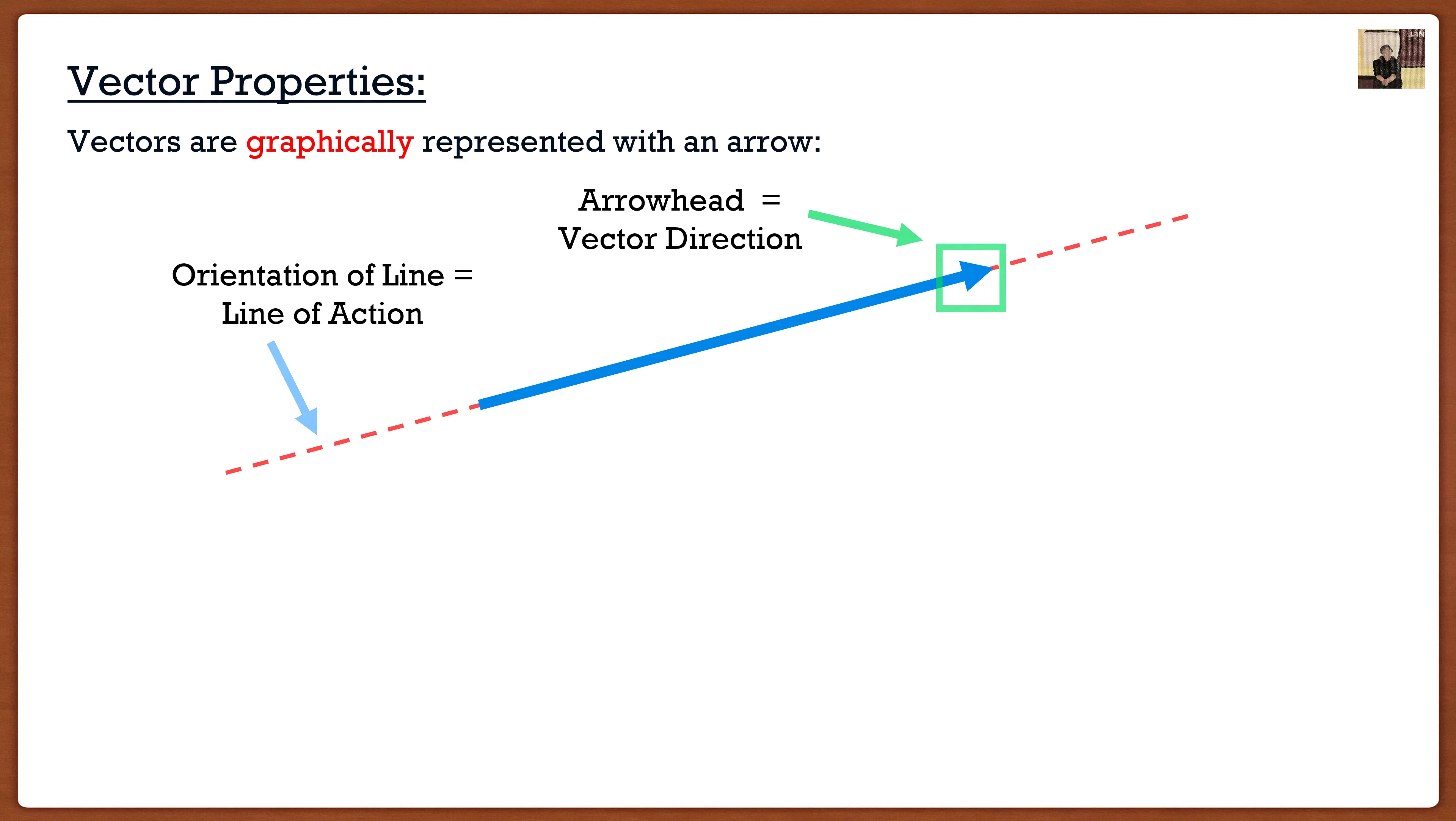The second one is the arrowhead, or the sense of the arrow. This is the vector's direction, and this is going to be very important. If I'm dealing with vertical vectors, it's going to be very important whether the vector is going up or the vector is going down. Think about forces. It's very important when you design a building to know if your forces are pulling the building up or pulling the building down.